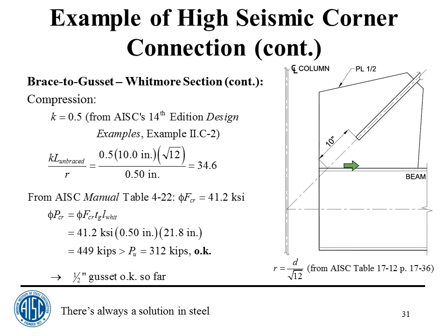The Whitmore section's main function is checking gusset buckling along the line of action. Thirty or forty years ago there was no method for this, and there were documented cases in the ASCE Journal of the Structural Division where gussets buckled — the building didn't collapse but roofs failed, requiring jacking and reinforcing plates. The Whitmore section is especially valuable for compression checks.